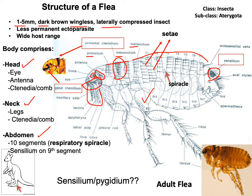On the ninth segment there is a sensory structure called the sensilium. Its function is very interesting: it helps the flea to detect air movement, vibration, and temperature — both the temperature of the host and the environment — as well as odor, carbon dioxide, and urine. It also has some role during copulation.